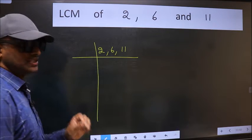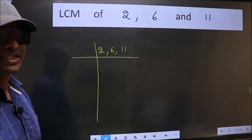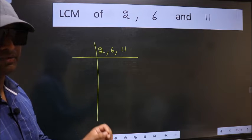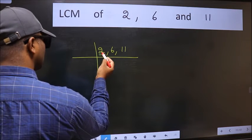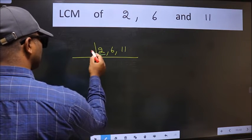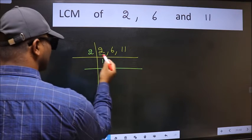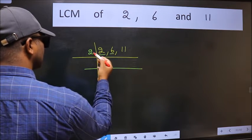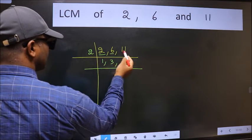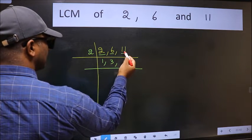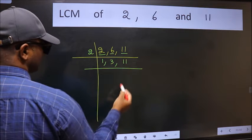This is your step 1. Now we should focus on the first number, which is 2. 2 is a prime number, so 2 wants 2. The other number 6 — when do we get 6 in the 2 table? 2 times 3 is 6. The other number 11 is not divisible by 2, so we write it down as it is.